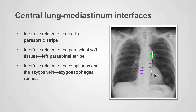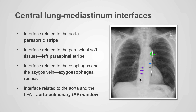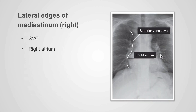The interface related to the esophagus and the azygous vein is called the azygous esophageal recess, highlighted by the purple arrows. The interface related to the aorta and the left pulmonary artery is called the aortopulmonary window, represented by the green line. The lateral edges of the mediastinum on the right are formed by the right atrium inferiorly and by the superior vena cava superiorly.